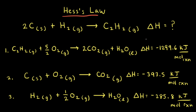As an example, let's say we're trying to find the change in enthalpy for the reaction of carbon with hydrogen gas to form C₂H₂, which is acetylene. We can calculate the change in enthalpy for the formation of acetylene using these three reactions below. Our approach will involve looking at these three reactions and comparing them to the original reaction to see if we need to change anything.